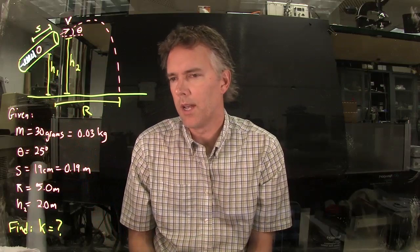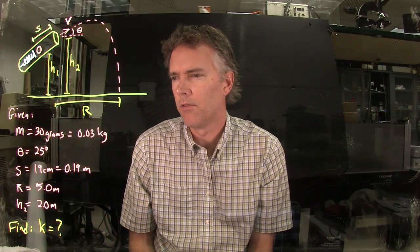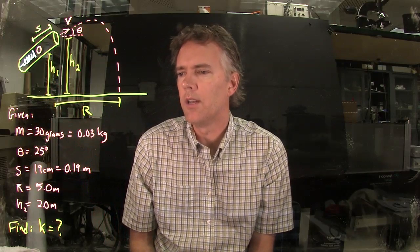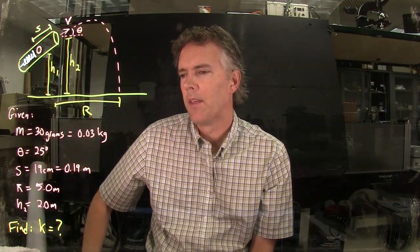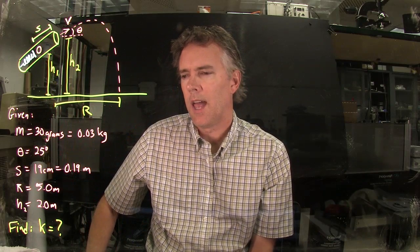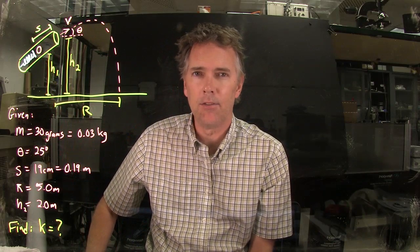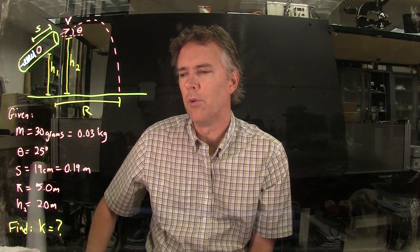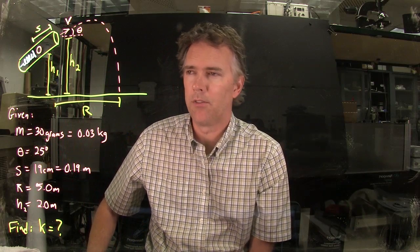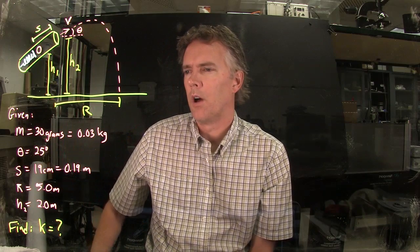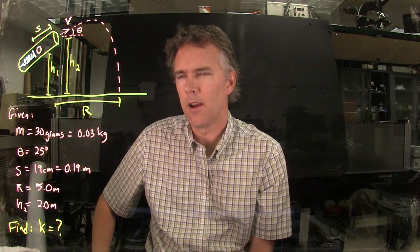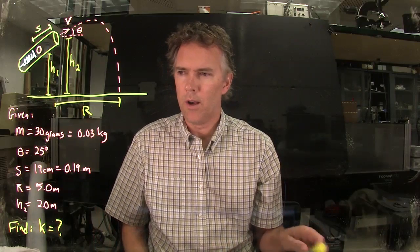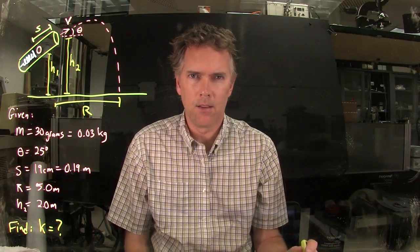Now, the givens in the problem that we just said are the following. The mass of the ball is 30 grams, which is 0.03 kilograms. Theta is 25 degrees. The compression distance of the spring is 19 centimeters. The range that it goes is 5 meters. And the height h2 that it leaves the spring is 2 meters. So what they're looking for is k, the spring constant. We're also going to probably need h1 for this problem, so identify it on there even though we're not exactly sure what h1 is yet.